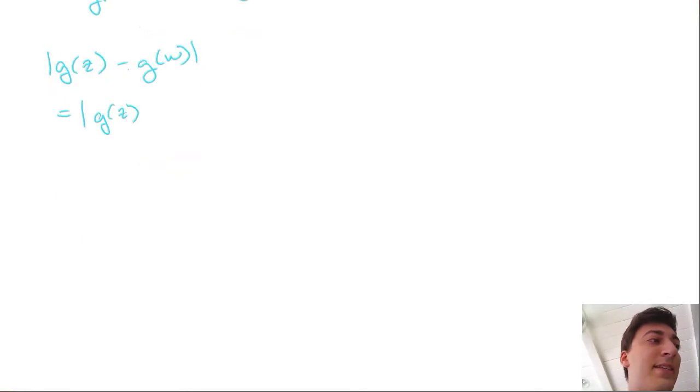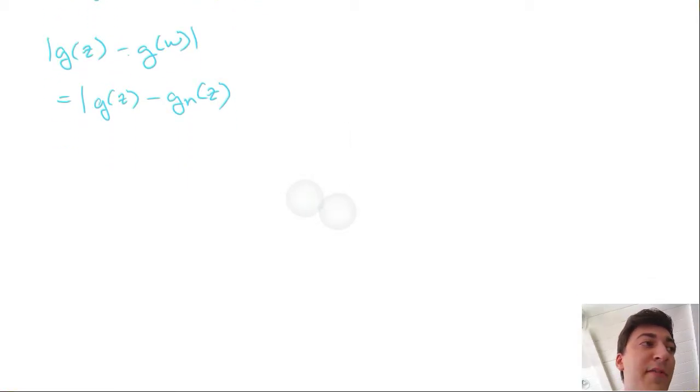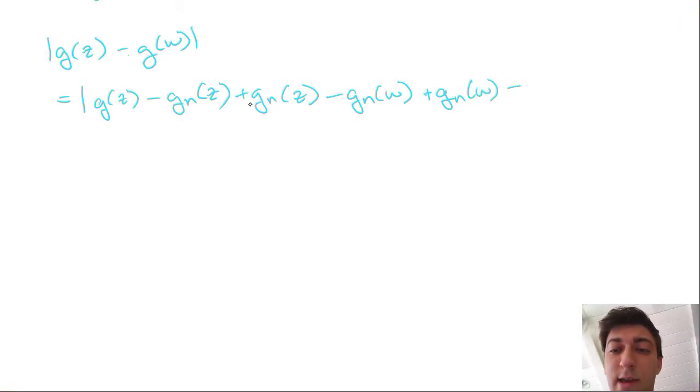This G(z), it makes sense to kind of insert also the Gn's in there, right? Because we know that we have this uniform convergence, so we can say a little bit about that. But if we subtract it, then we have to add it back because we can't just add in random values. Okay, that's fair. And we're going to do a similar thing for the W as well. So let's subtract off a Gn of W, add back a Gn of W, and we have to subtract off a G of W.